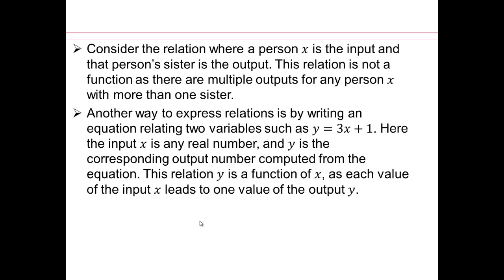Another way to express a relation is by writing it, by equating two variables. For example, if I write y equals 3x plus 1, here x is the input, and y is the output. For every individual x, you multiply by 3, add a 1, produces a unique output. So y equals 3x plus 1, y is considered a function of x. x is the independent variable, and y is called the dependent variable.